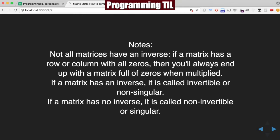A few notes about inverses. Not all matrices have an inverse matrix. If there's a row or column that's all zeros, it will always end up a matrix full of zeros when multiplied.